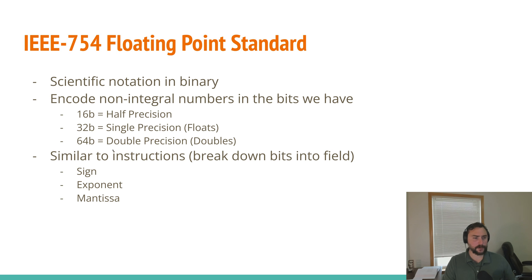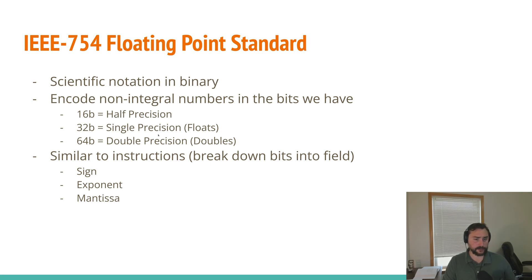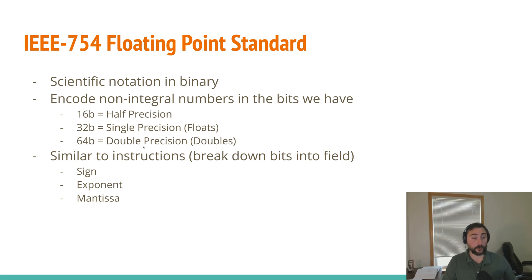We encode these numbers into a different number of bits depending on our data type. Three very common data types are half precision numbers, which are 16 bits; 32-bit numbers, which are single precision numbers often referred to as floats with the float data type in C or C++; and then 64-bit numbers or double precision numbers, often referred to as the double type in C or C++.